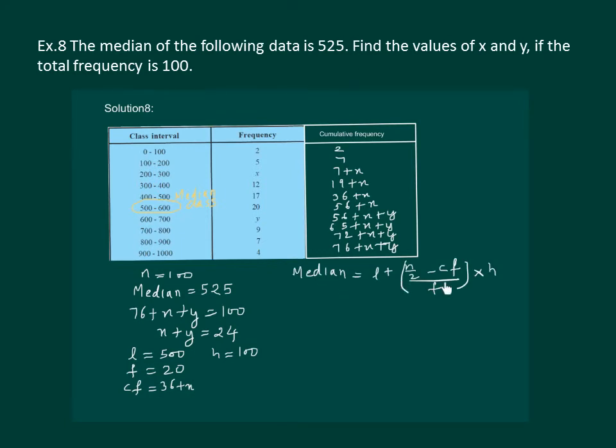Recall the formula for median and substitute the values. We get median is 525 equal to L is 500, n by 2 means 100 by 2 is 50 minus cf that is 36 plus x, so it becomes minus 36 minus x whole by f which is 20 into h that is 100. Solving this further we get 25 equal to 70 minus 5x, or x equal to 9.